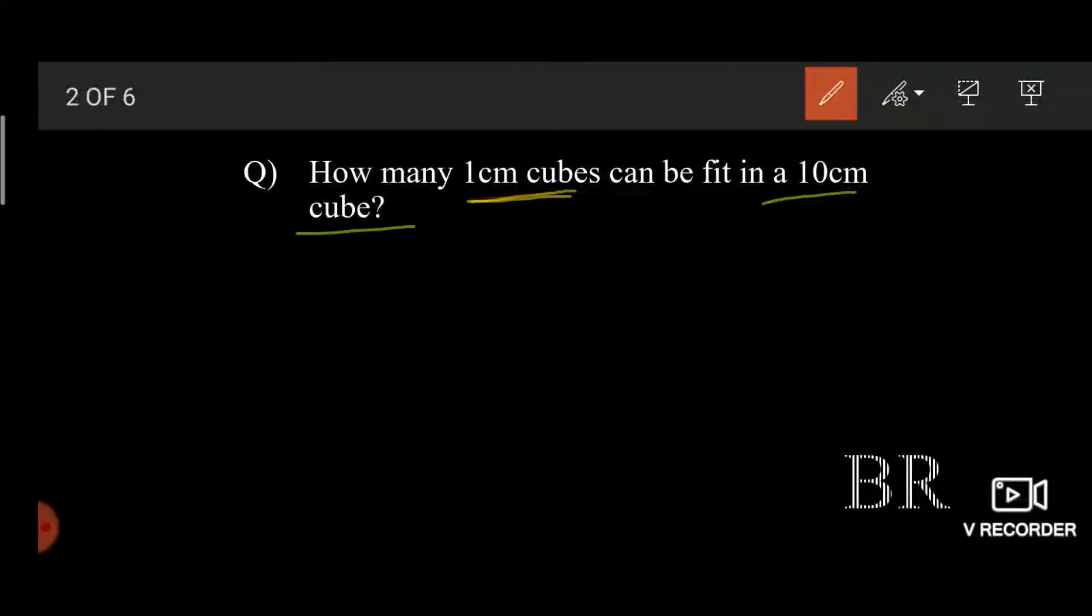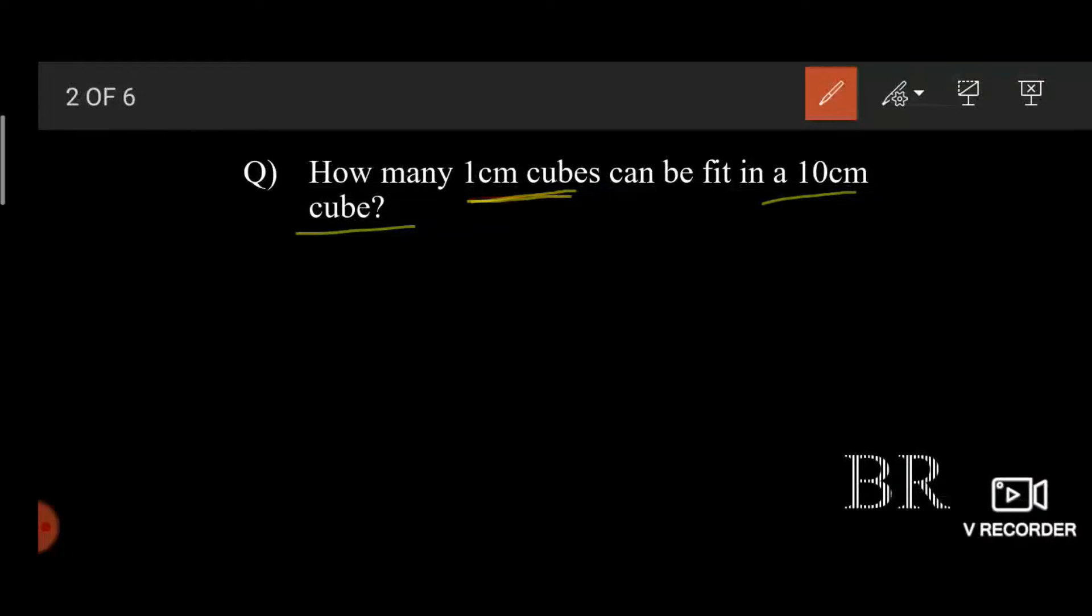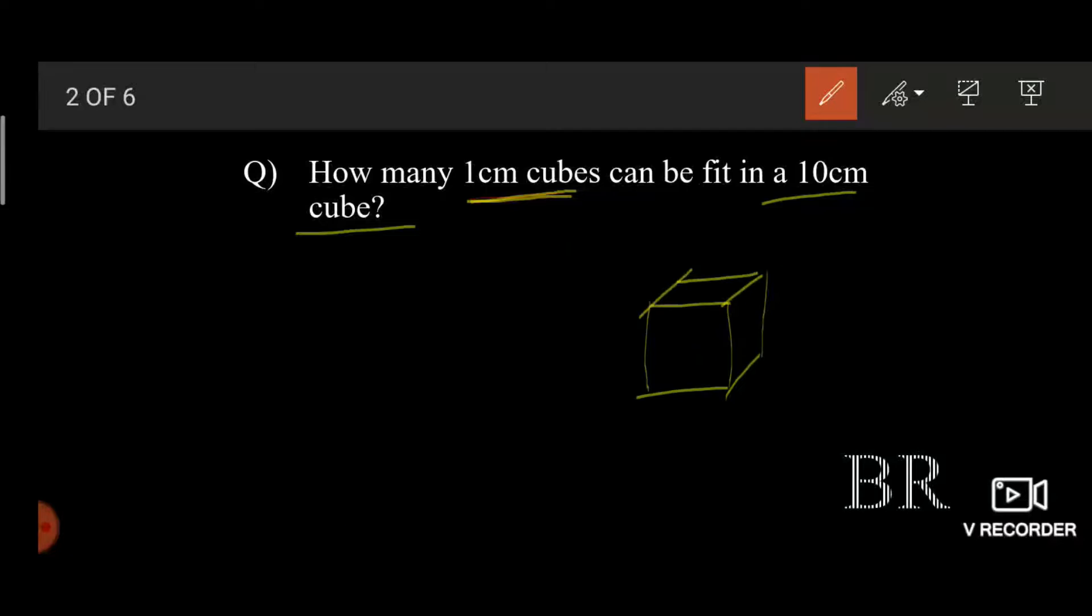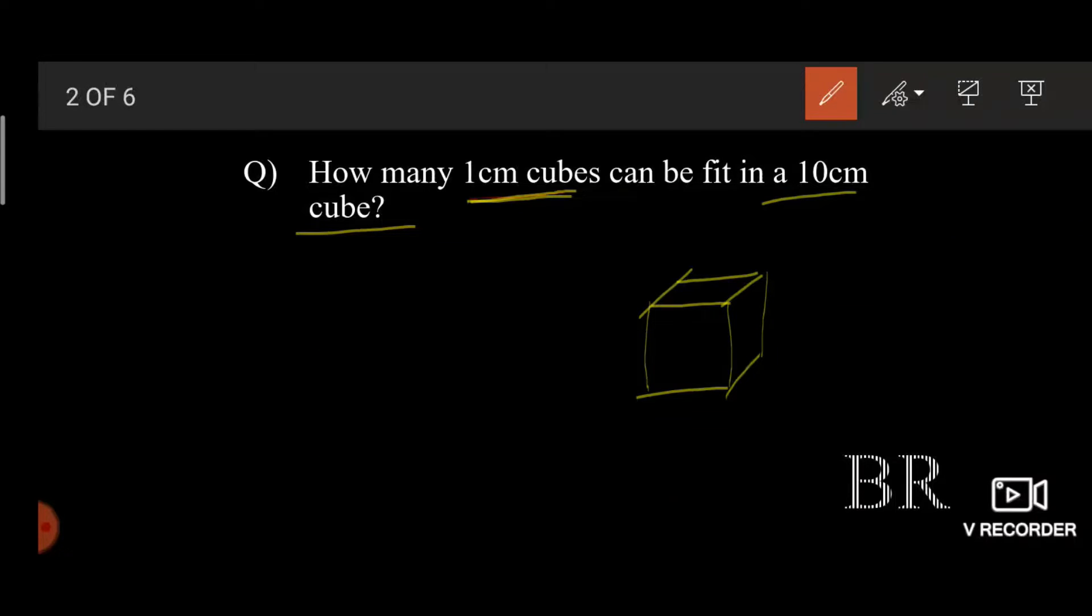Actually you don't need a pen and paper to solve this when you observe it thoroughly, but just for the sake of explaining I am doing it for you. Now assume that this is a 10cm cube. We know that volume of a cube is side cube, that is equal to 10 cube which gives us 1000cm cube.